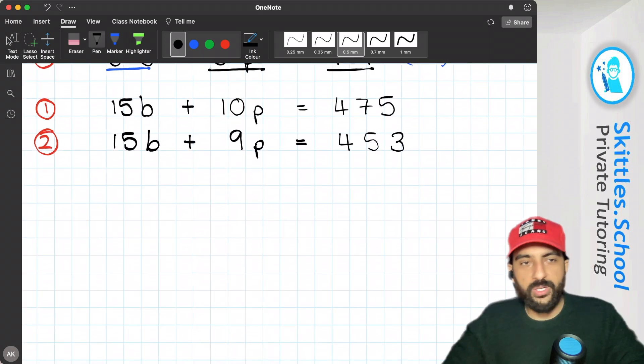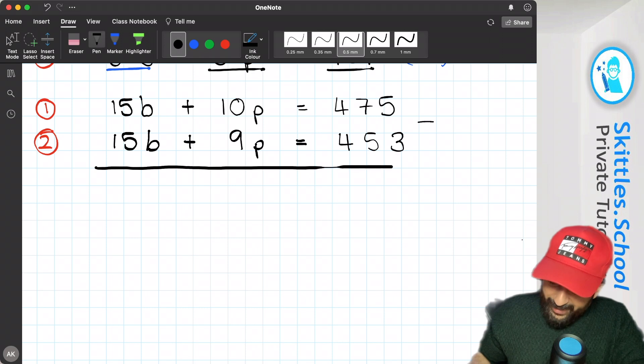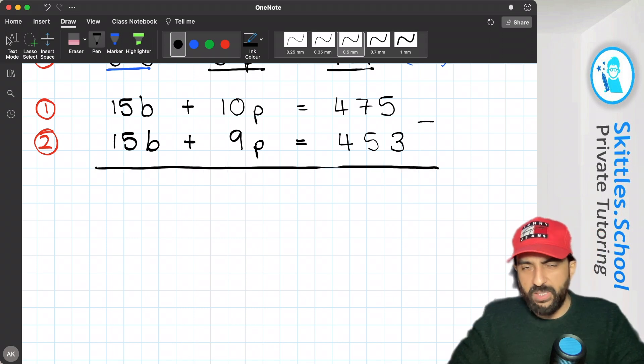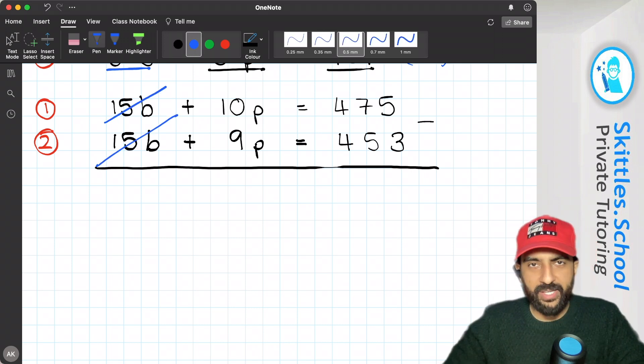We've got two new equations. Now if we subtract these equations, what will happen is we will eliminate the bananas. Because 15 bananas take away 15 bananas is no bananas. So we'll end up with those two eliminated.